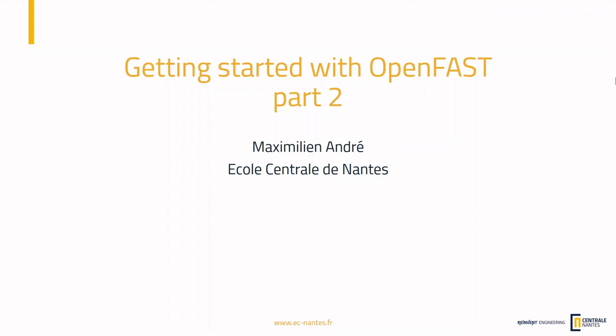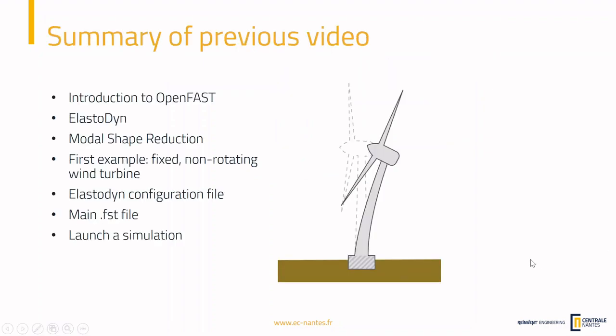Welcome everyone to the second part of our tutorial with OpenFast. Last time we saw an introduction to OpenFast where we learned about the ElastoDyn module and how it was used for structural modelling. We explained the mode shape prediction used in ElastoDyn and saw our first example of running OpenFast with a fixed non-rotating wind turbine. We saw how to tune the ElastoDyn configuration file and the main FST file, and finally we launched a simulation.